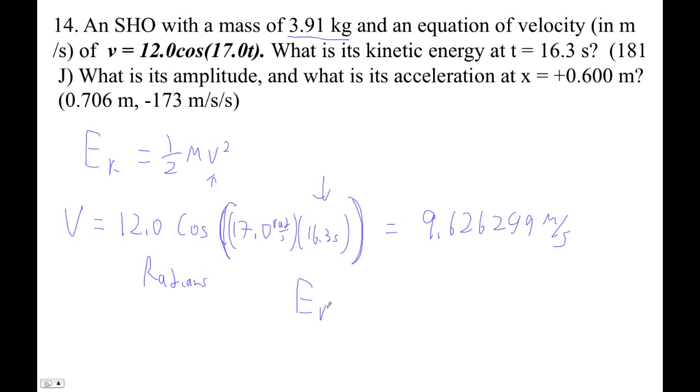I'm getting that the velocity is 9.626249 meters per second, right? So my kinetic energy would be 1/2 m v squared, which would be 1/2 times 3.91 kilograms is my mass, right, times the answer that I just got, 9.626249. I'm getting 181 joules. Ta-da.